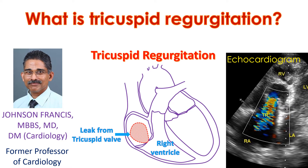A trivial leak in the tricuspid valve is common in normal individuals and can be detected by sensitive tests like color Doppler echocardiogram.